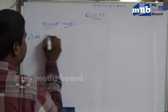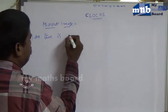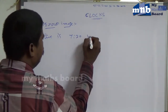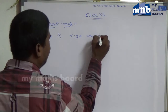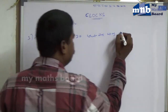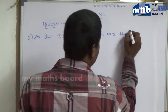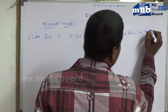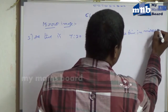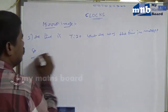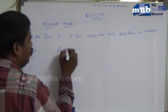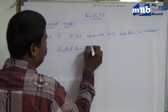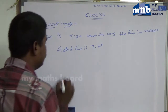The time is 7:20. What is the time in the mirror? The actual time is 7 hours 20 minutes — find its mirror image.